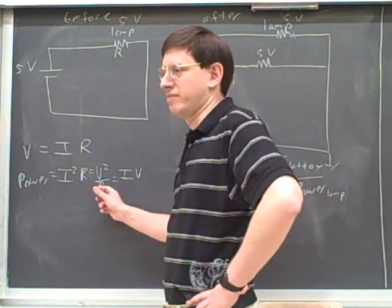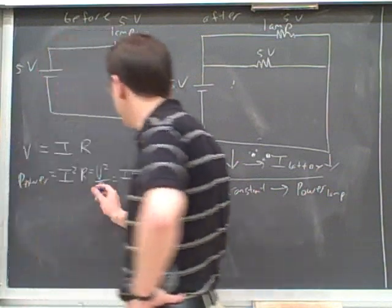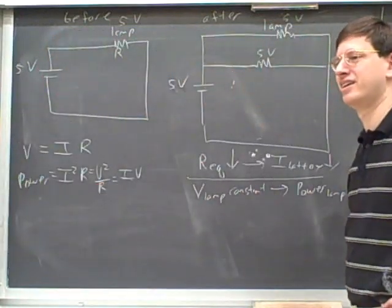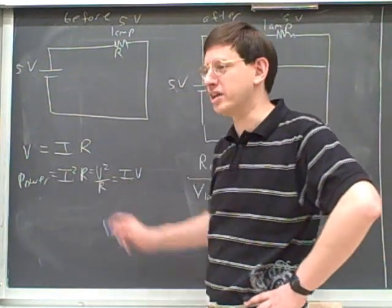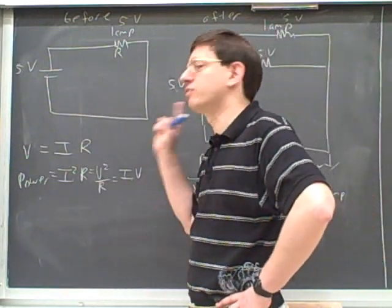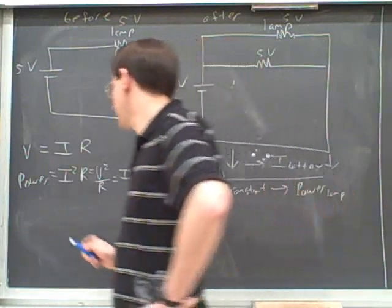Because what's happened to the resistance of the lamp? It went down. The resistance of the lamp. Oh, it didn't change. Otherwise, this wouldn't be a good expression. Remember, we want to use the expression where only one thing is changing. It's going to be much simpler to use the expression where only one thing is changing.